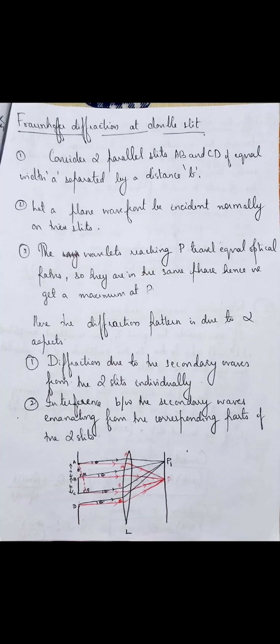Now we are imagining a plane wavefront to be incident normally on two slits. Then what will be the diffraction pattern that you see on the screen? As you know, in Fraunhofer diffraction due to a single slit, you get a central maxima in the middle followed by different orders of minima and secondary maxima on either sides of it, with their intensities going on decreasing.